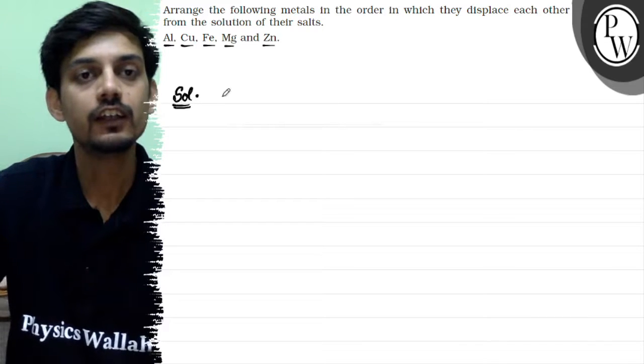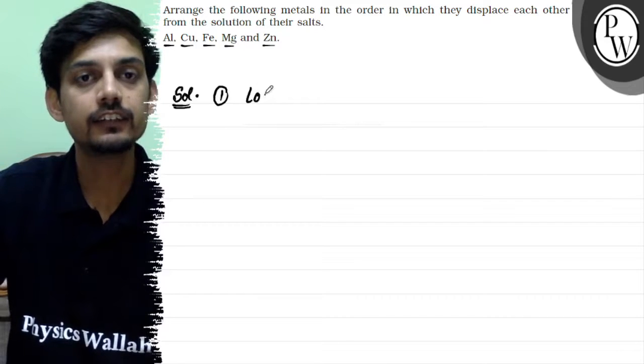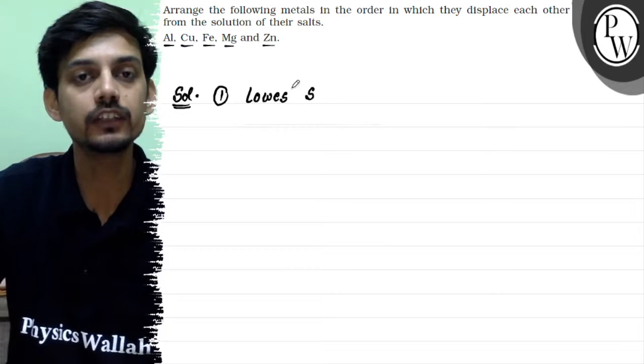First of all, this is a question based on electrochemical series. From there we can see that the metal with lower standard reduction potential (SRP) has higher reducing power and can displace metals with higher SRP from their solutions.